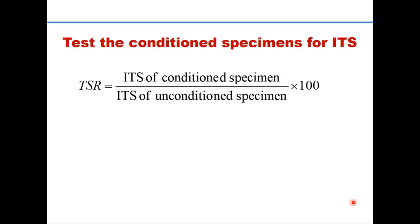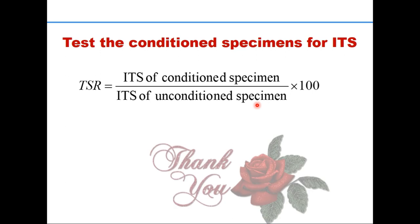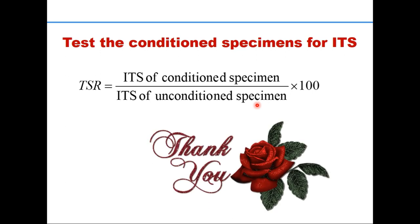Now you have two sets of specimens: one conditioned (wetting and freezing) and another in dry condition (unconditioned), which is tested immediately after making and keeping at 25 degrees centigrade for 2 hours. The TSR, or tensile strength ratio, is the ratio of ITS of conditioned specimens to ITS of unconditioned specimens. The requirement of TSR is specified in different IRC codes and mix specifications. Thank you for watching — I hope you understood the important details of ITS and TSR.